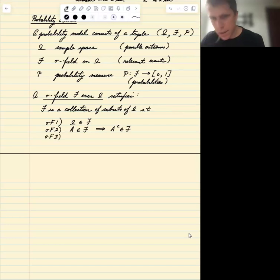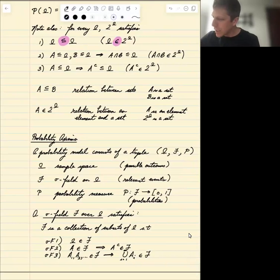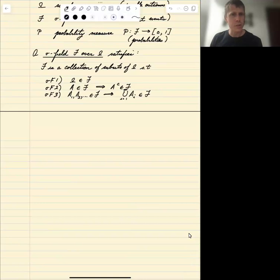And finally, if it contains a collection of events, it has to contain their countable union. So up above, we saw that that's true for the power set. We saw that the power set contains the sample space, it contains complements, and it contains, in this case, intersections. And you could also see that it also will contain unions. Unions and intersections are related to one another, as we'll see in exercises. But this is what we need. And then once we have that, we can define a probability measure.